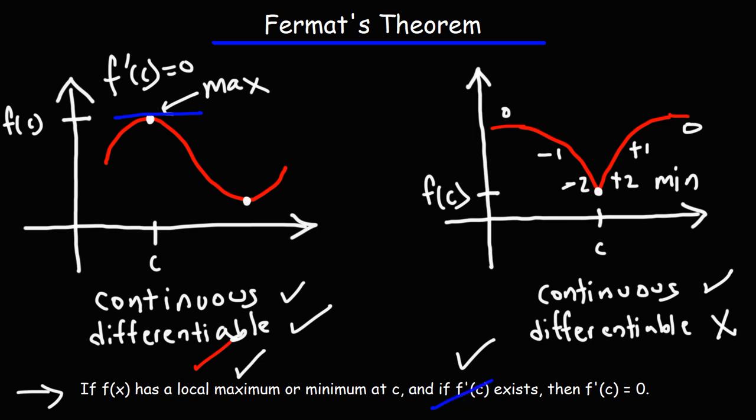So since f'(c) does not exist, then for the graph on the right side, f'(c) does not equal zero. If you try to find the derivative at this point, it doesn't exist because it's not differentiable at point c.